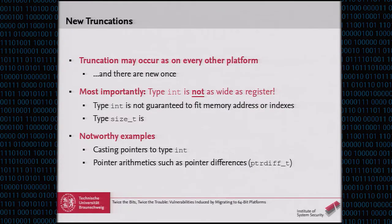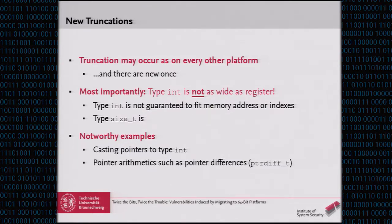For truncations, things work much the same as on any other platform — there are simply new combinations where truncations may happen. Most importantly, the type int is not as wide as registers on 64-bit platforms, so it is not guaranteed to fit memory addresses or indices. Notable examples include casting pointers to integers, which changes signness and is discouraged anyway, and more subtly, pointer differences. If you subtract one pointer from another you get a ptrdiff_t, which is the same size as a pointer, and you really should not assign this to an integer on 64-bit platforms where integers are only half the size.